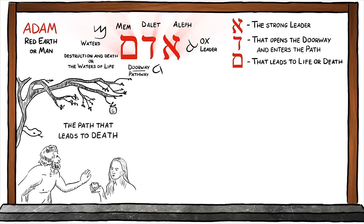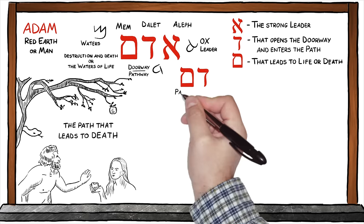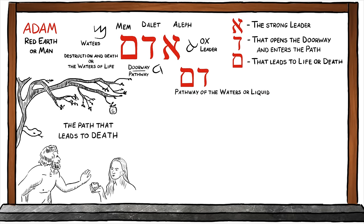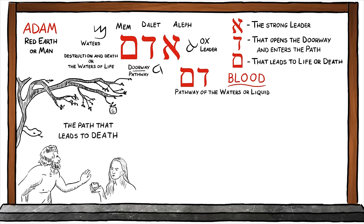God has mercifully provided a way of escape. The mystery of this redemption and deliverance is hidden in the name of Adam. Consider the Dalet and the Mem, the second and third letters in the name of Adam. When you put Dalet and Mem together, you get the picture of the pathway of the waters or liquid. In conventional Hebrew, Dalet-Mem spells the Hebrew word for blood — the pathway of the liquid.